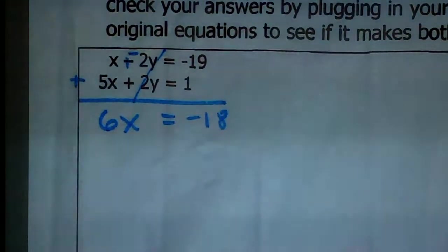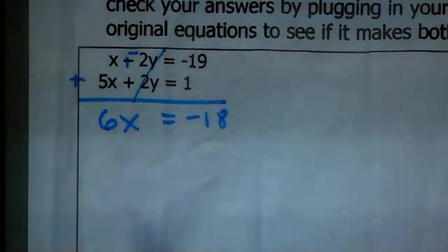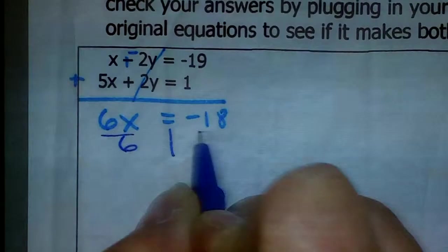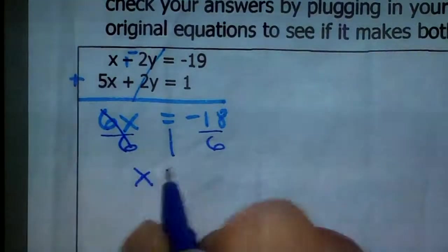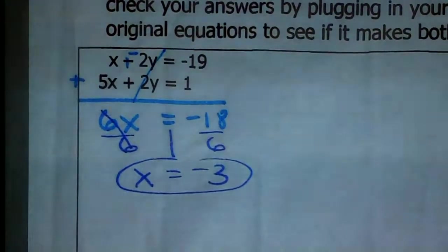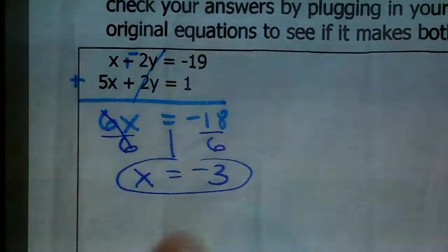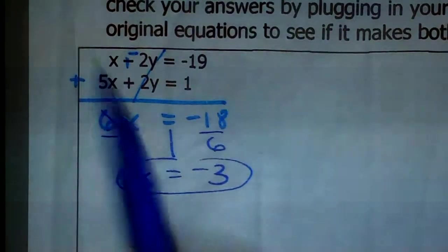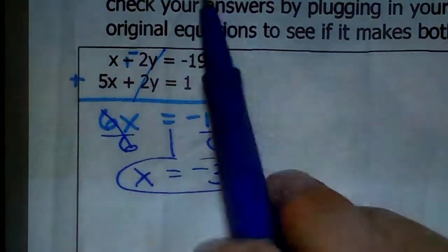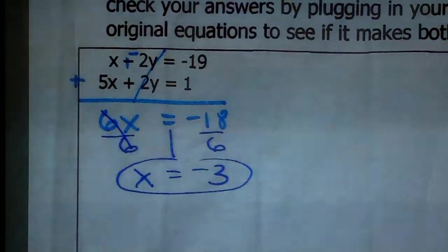We can solve for X by dividing each side by 6, and we get X equals negative 3. Now we have our X coordinate of the ordered pair that makes both systems true. It's kind of like going back to substitution — we know what X is, so we plug it into one of the original equations. Step 2 says: substitute the value of the variable you found into one of the original equations to solve for the other variable.